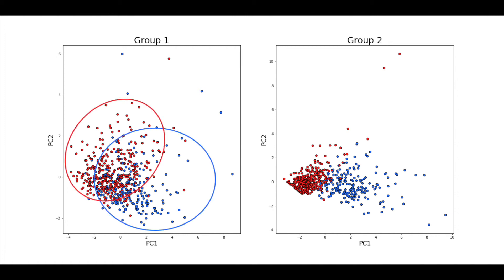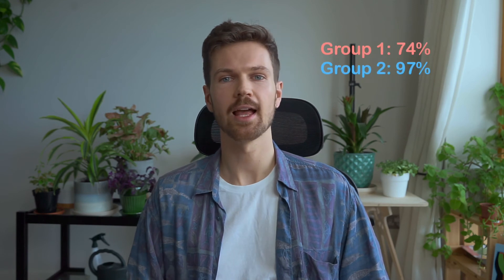For group 1, there is some separation, but there's still a lot of overlap. With group 2, you can see that the clusters are more distinct. So from these plots, we'd expect the features in group 2 to be better predictors. And in the article, we show that this is actually the case. A logistic regression model built using the features in group 1 had an accuracy of 74%. In comparison, a model built with the features in group 2 had an accuracy of 97%.